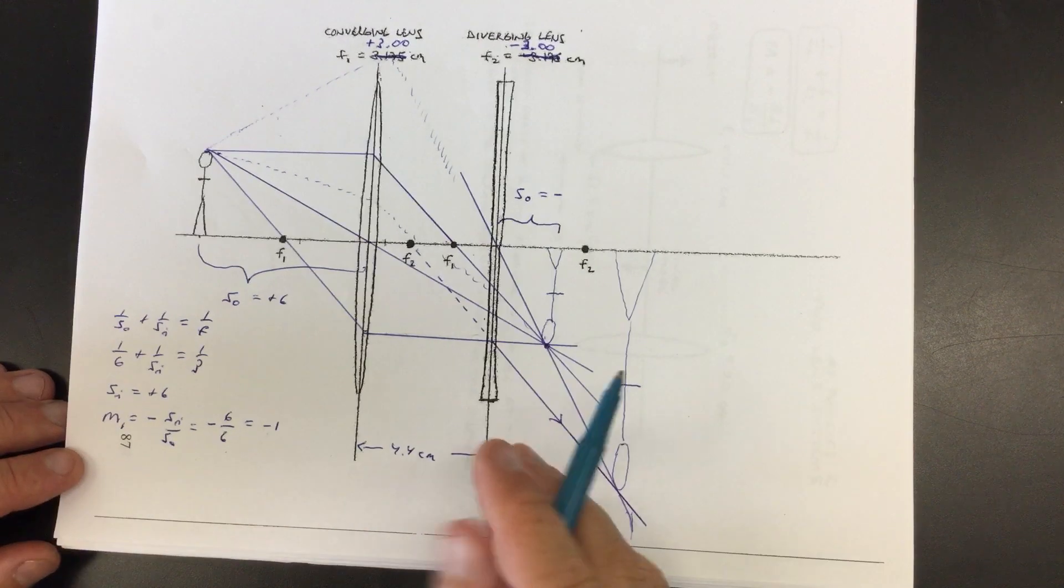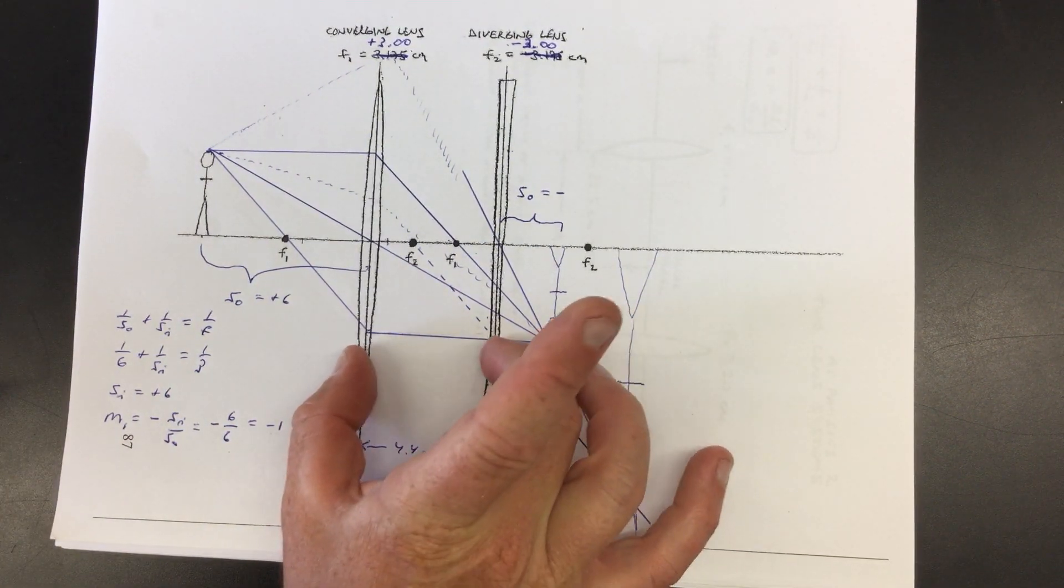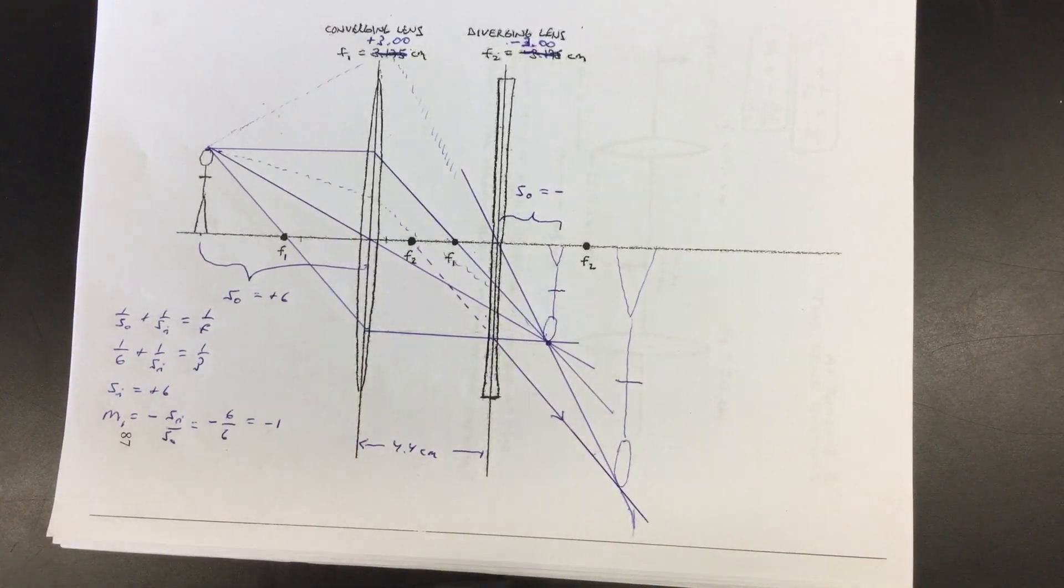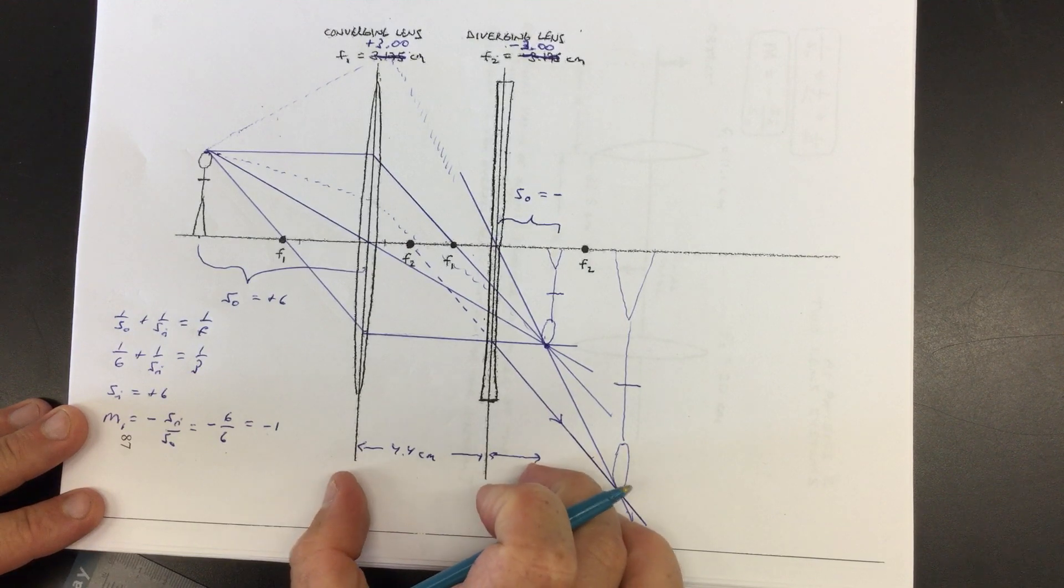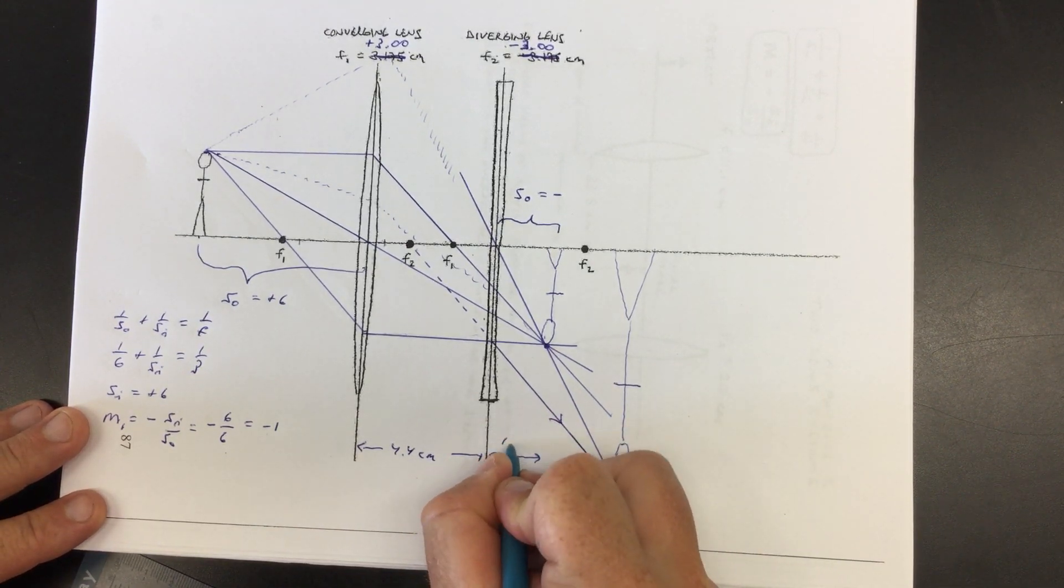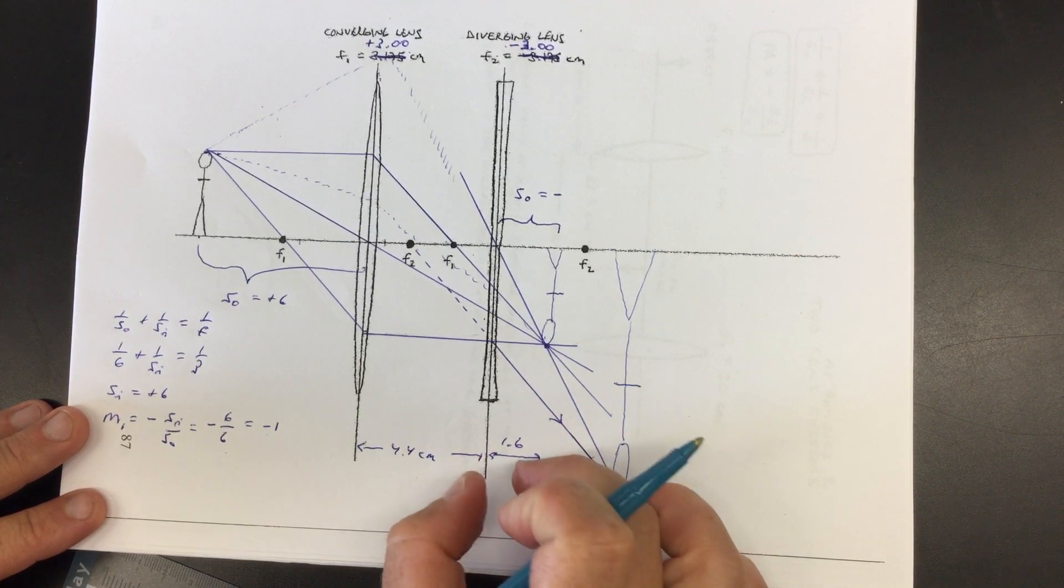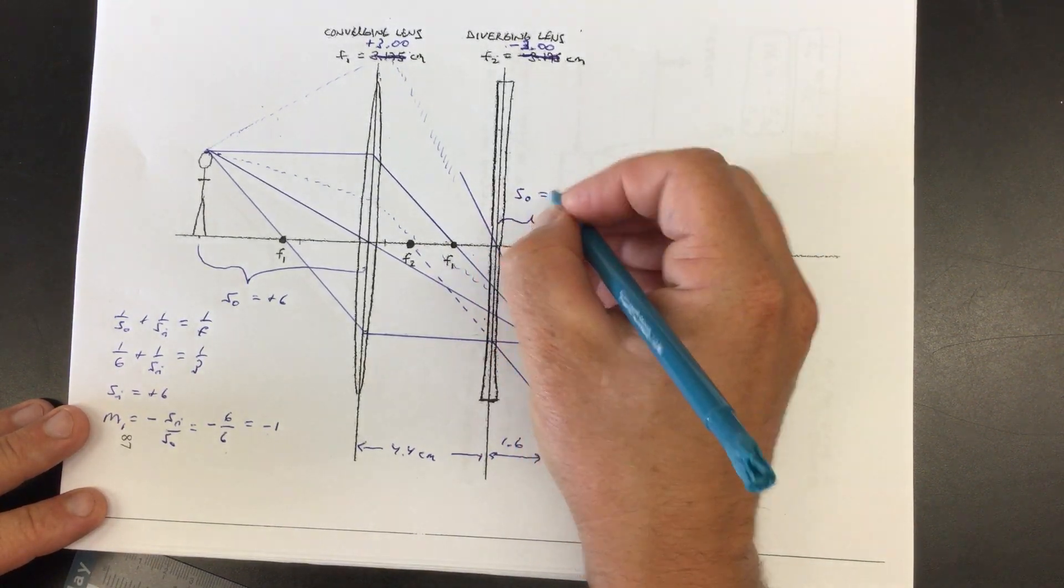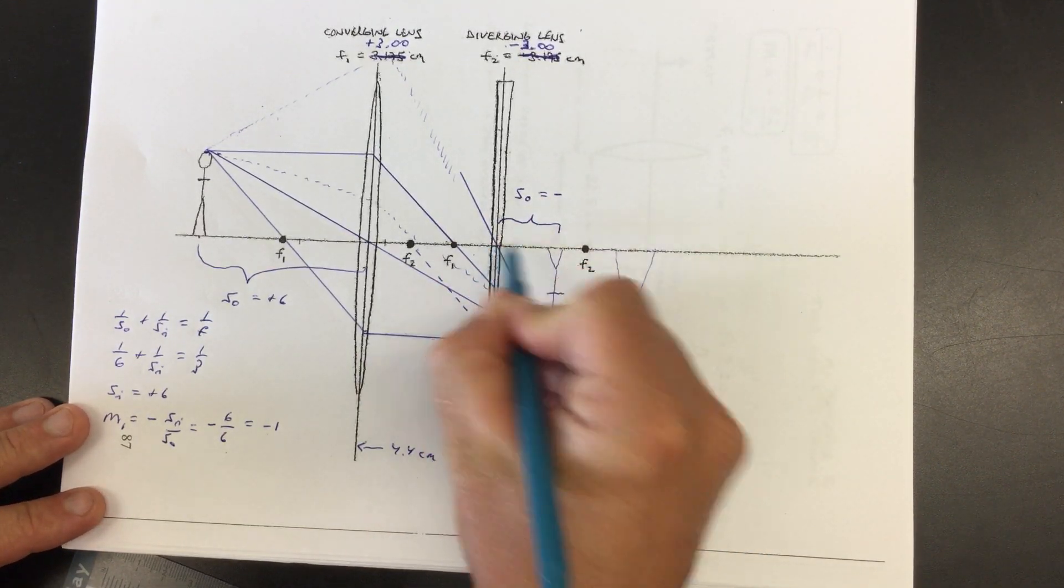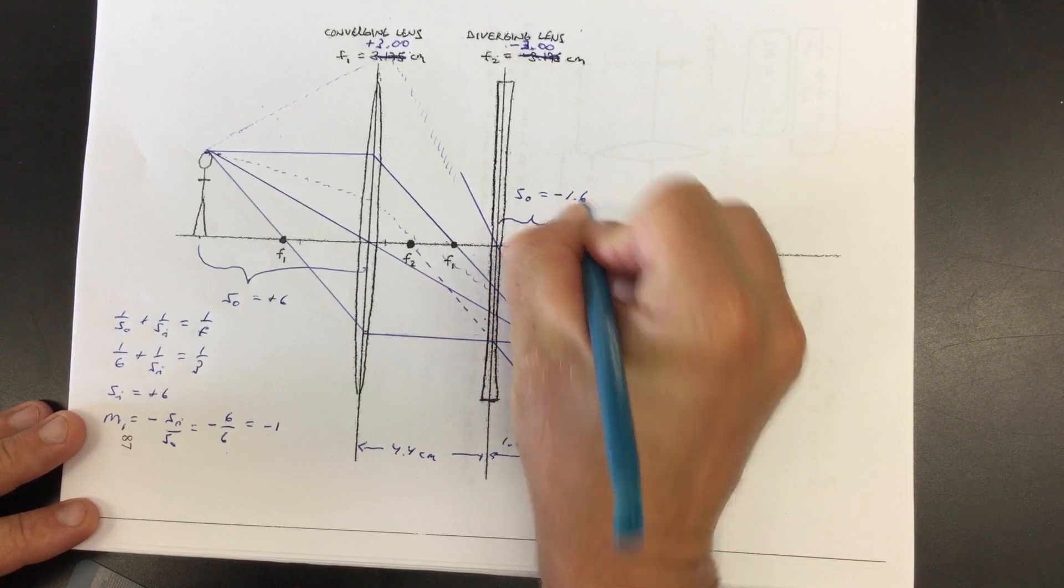Okay. Well, so the deal is if this distance was supposed to be six, but these are 4.4 apart. That means that this leftover distance here, because this whole thing needs to be six, this must then be 1.6. Okay. This distance. So if that's the case, then our object distance, which is from the center of this lens to this object, that needs to be minus 1.6.